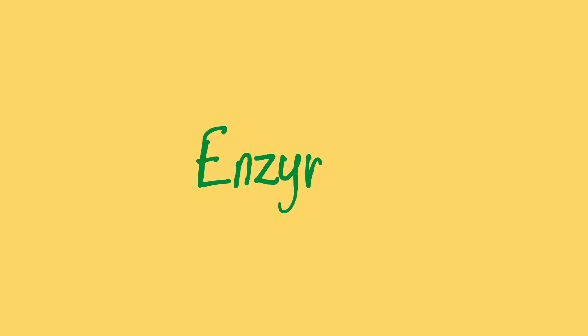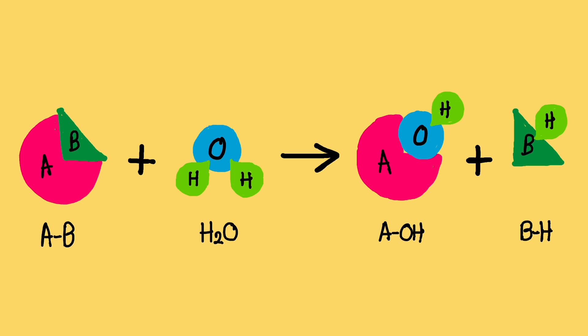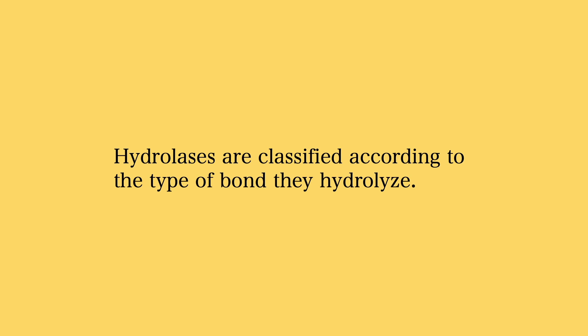Hydrolases are one of the six classes of enzymes. You know this is a category of enzymes because it ends with '-ase,' as in hydrolase. Hydrolases are a type of enzyme that catalyzes the breakdown of larger molecules into smaller ones through the addition of water. Hydrolases are classified according to the type of bond they hydrolyze. Let's take a closer look at some examples.